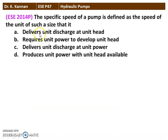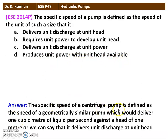The next question from the 2014 question paper: the specific speed of a pump is defined as the speed of a unit of such a size that — Option A: it delivers unit discharge at unit head; Option B: it requires unit power to develop unit head; Option C: it delivers unit discharge at unit power; Option D: it produces unit power with unit head available. The definition of specific speed of a centrifugal pump is the speed of a geometrically similar pump which would deliver 1 m³/s against a head of 1 meter — that is, it delivers unit discharge at unit head. The correct answer is Option A.